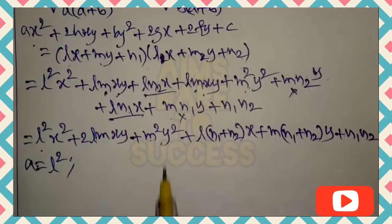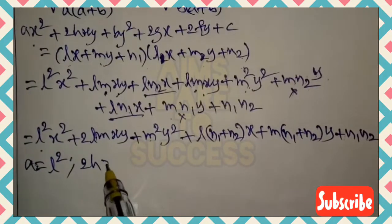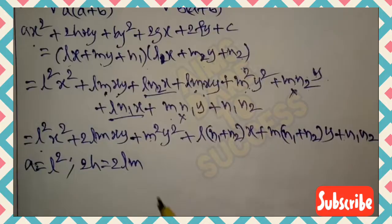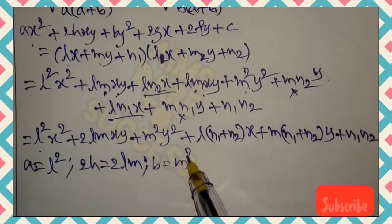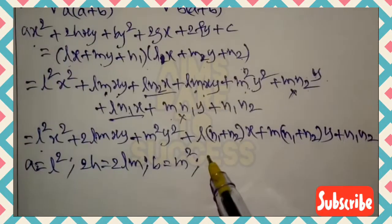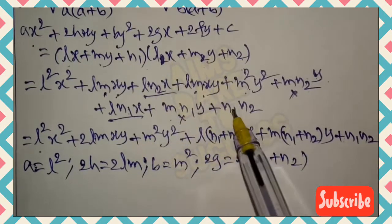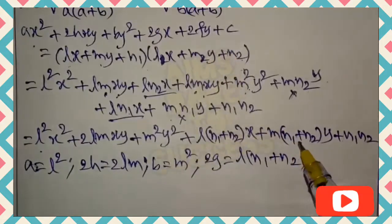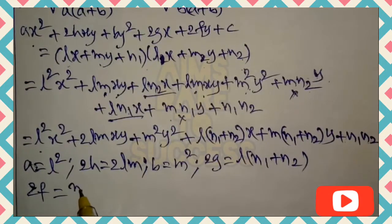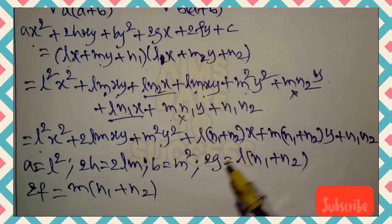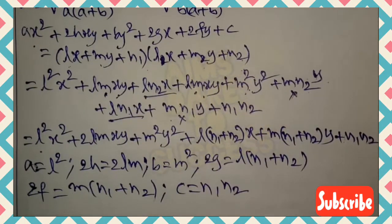Comparing coefficients with ax² + 2hxy + by² + 2gx + 2fy + c = 0, we get: a = l², 2h = 2lm (so h = lm), b = m², 2g = l(n₁+n₂), 2f = m(n₁+n₂), and c = n₁n₂. These values are very important and useful going forward.